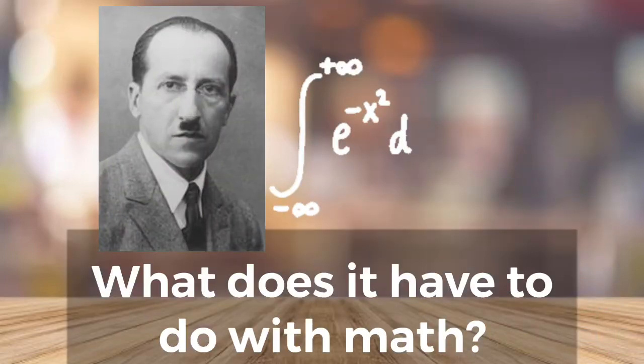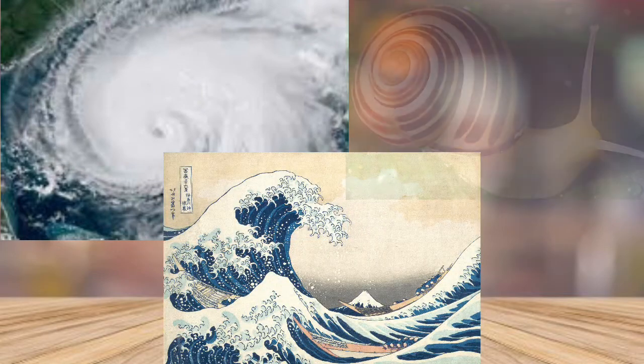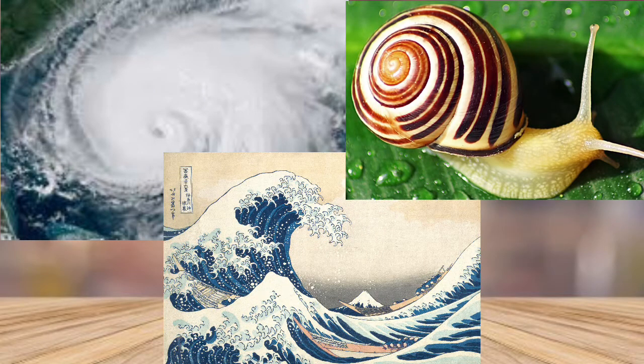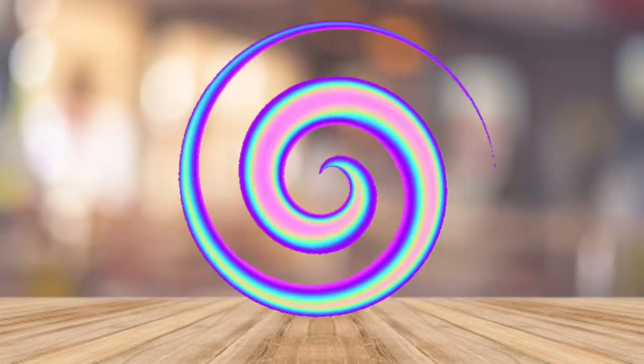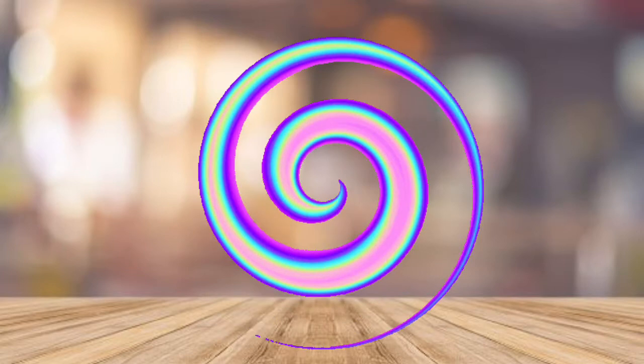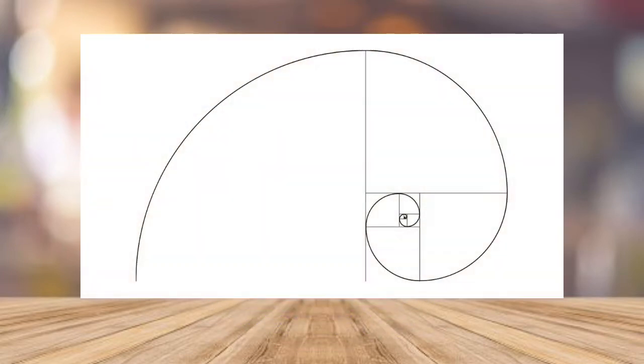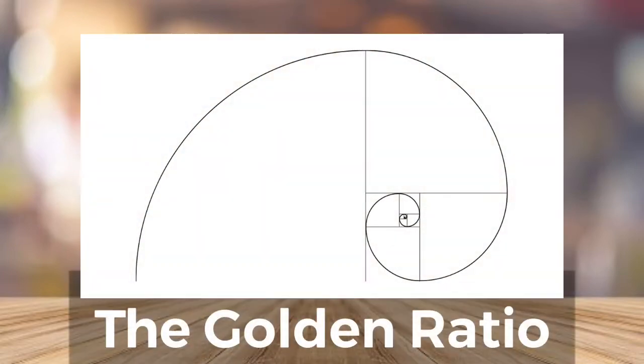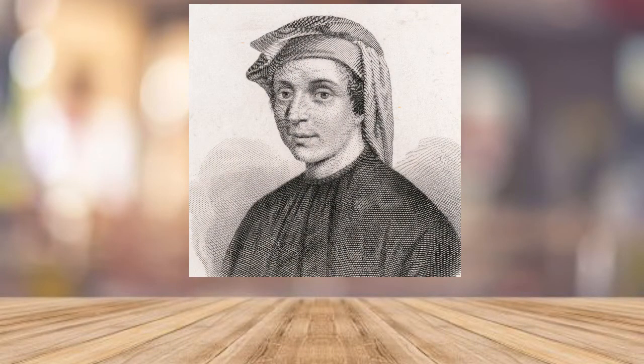So what do Pete Mondrian and his composition paintings have to do with math? I'm going to show you some pictures and I want you to study them and think about what the pictures have in common. What about them catches your eye? Do you notice the spiral that all of the pictures have? This spiral that we see in all of the images is called the golden ratio and was discovered by an Italian mathematician many many years ago.